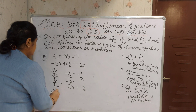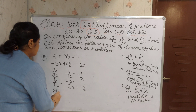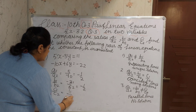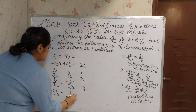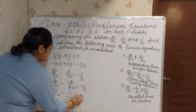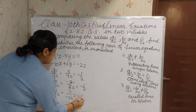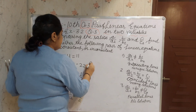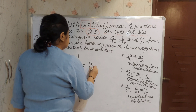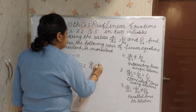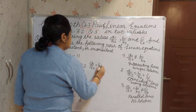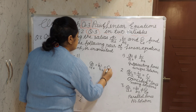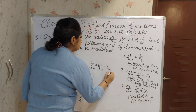Now C1 by C2: 11 upon minus 22. Reducing the term, 11 to 22, you get minus 1 by 2. Now you can compare: A1 by A2 equals B1 by B2 and equals C1 by C2.